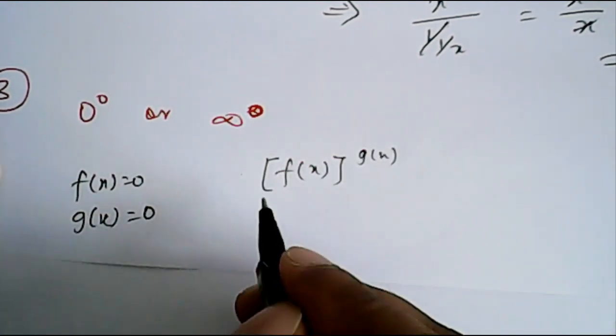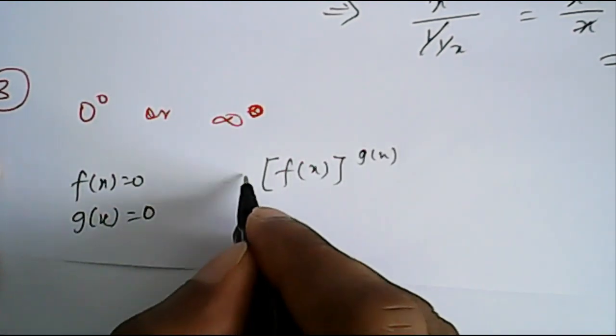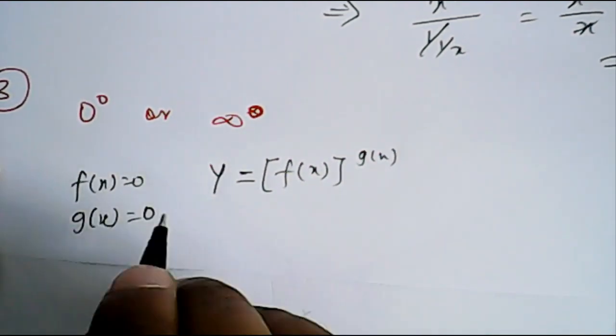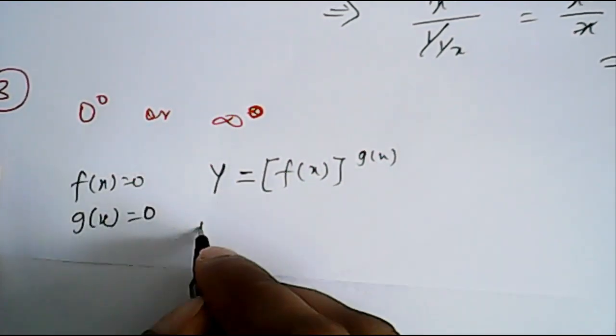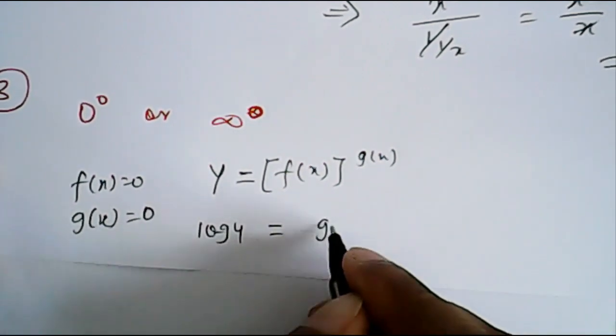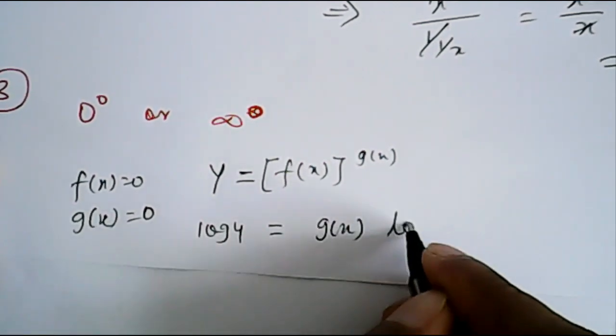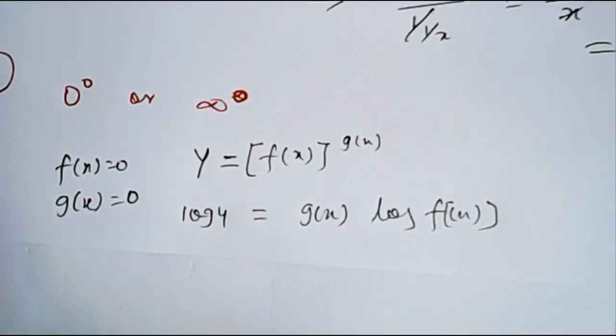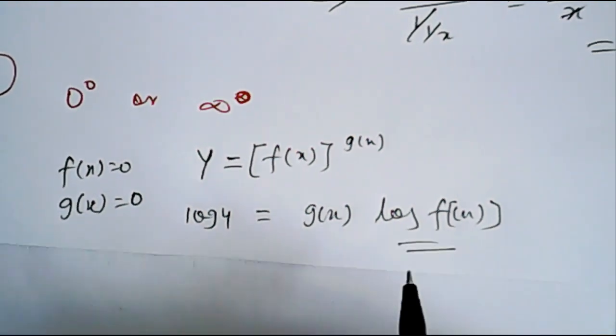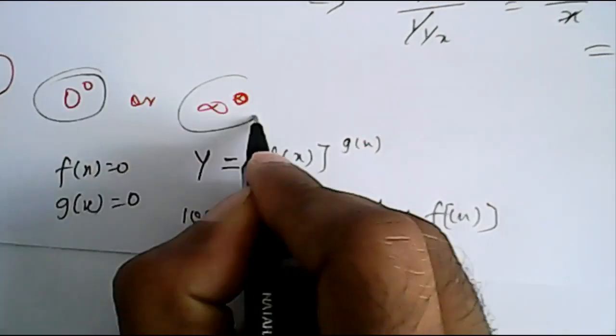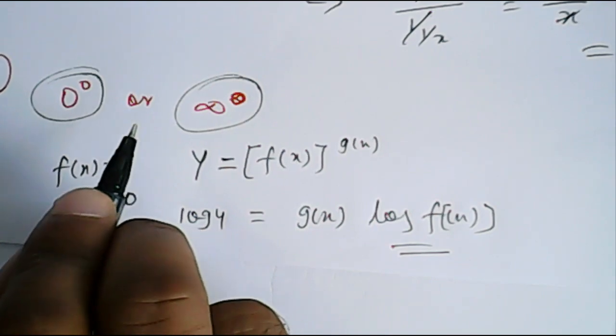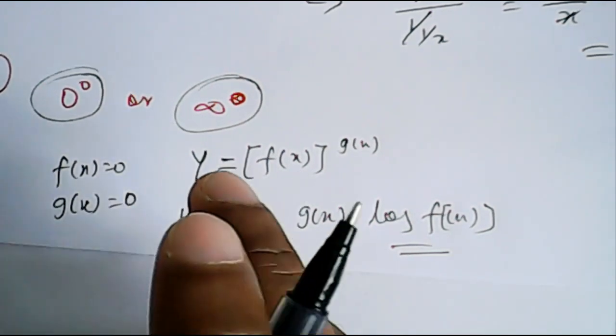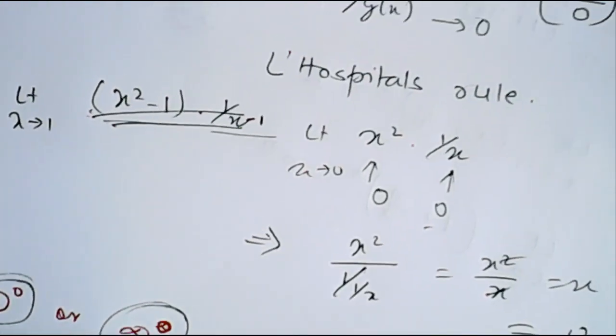So here, if we have f(x) to the power g(x), then in this case, what do we do? We take another variable, let's say y, and then we take log of it. So it will become log of y equal to g(x) into log of f(x). So something like this we can do. Limit x tends to a and then we can proceed. So whenever this is in terms of this power, we will take log both sides and we will simplify the expression. So this is how we will proceed.